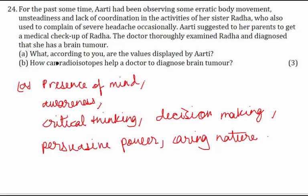The second part of the question is: how can radioisotopes help a doctor to diagnose brain tumor? Before we write the answer, we should know that the techniques doctors have been using since 2003 have been majorly MRI and CT scans, and there was even a Nobel Prize for this application of diagnosing brain tumors. Let's talk about these scans used to diagnose brain tumors and other parts of the body which have some tumors.